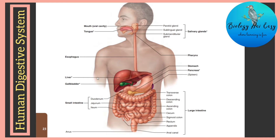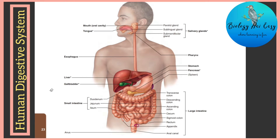Before that we must know what digestion is and how the human digestive system helps in digestion of food. Digestion can be defined as the process of conversion of large, complex and insoluble organic molecules into simpler, smaller and soluble molecules. This is made possible because our body has a digestive system — the alimentary canal and its associated digestive glands.